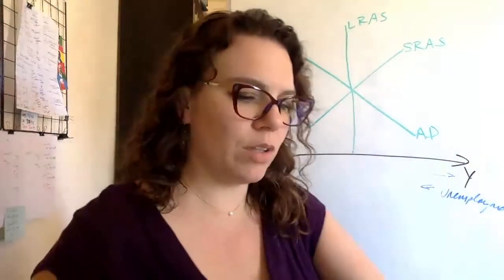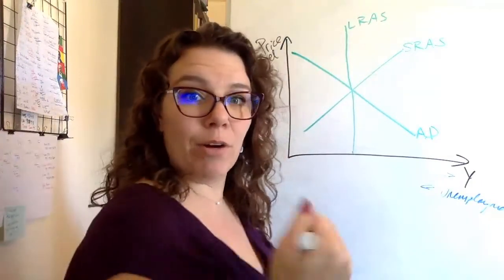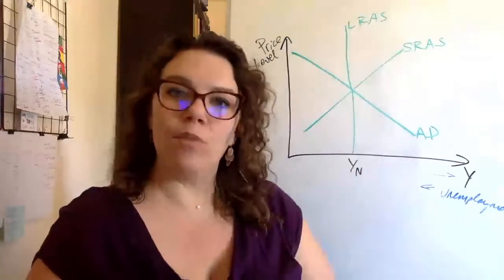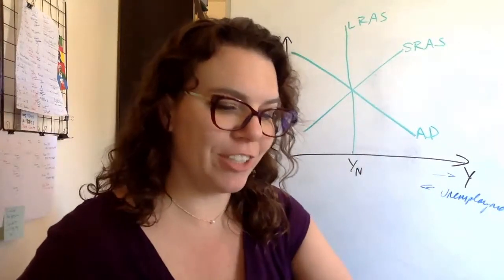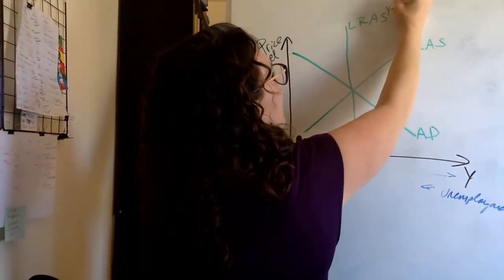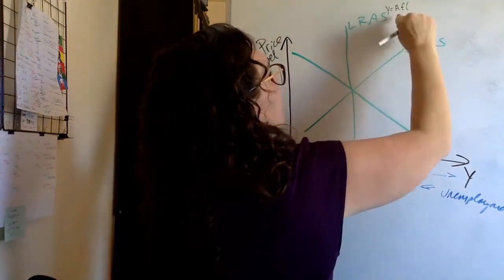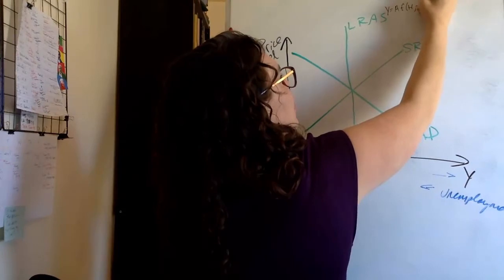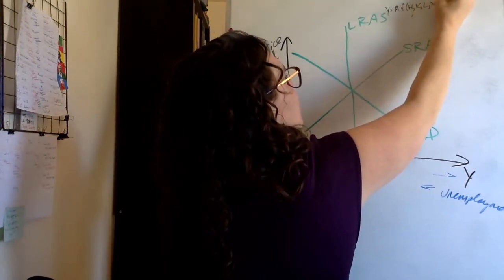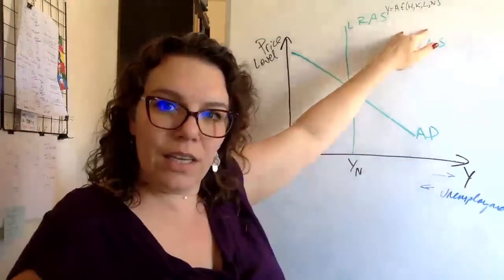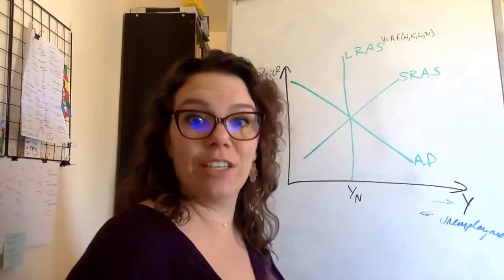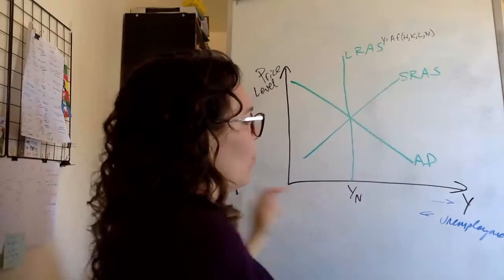Remember long-run aggregate supply is based on our ability to produce goods and services in the long run. So there's a natural rate of output which is the GDP we can produce with our production function, which is why the only things that will shift long-run aggregate supply are going to be things in that production function: technological advancement, human capital, physical capital, labor force, and natural resources. These things permanently affect our ability to produce goods and services on a national year after year level.